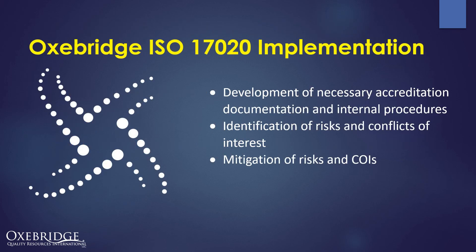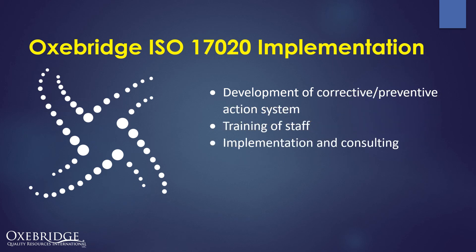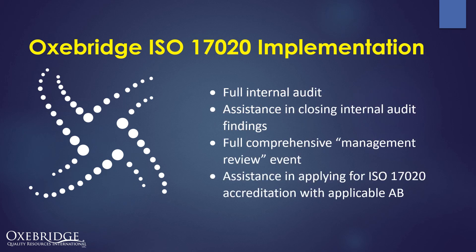Oxbridge can assist on this implementation using our ISO 17020 implementation program. We develop the necessary accreditation documentation and internal procedures for you based on interviews with your staff. We help identify risks and conflicts of interest, and develop plans to mitigate them. We develop the corrective and preventive action system, train the staff, and provide general implementation consulting throughout the process. Finally, we perform the full internal audit, help close findings, assist with the comprehensive management review event, and help you apply for ISO 17020 accreditation with your chosen accreditation body.